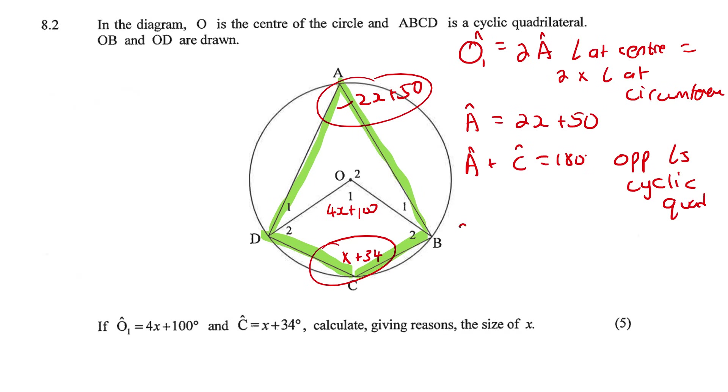Just substitute in the values. A is 2x + 50, C is x + 34. So that's 3x + 84 = 180. Take 84 to the other side, you get 3x = 96. Divide both sides by 3, you get x = 32 degrees.